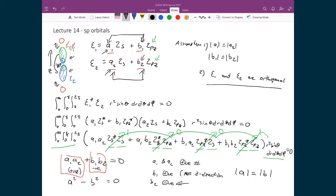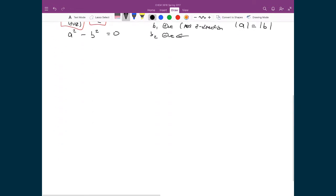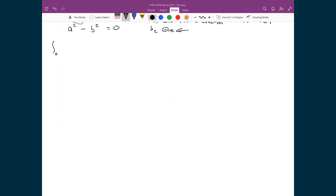So let's find out what they are, what A and B are through normalization. To normalize we'll say, here's our integral, 0 to infinity, 0 to pi, 0 to 2 pi, and we're going to be looking at C1.